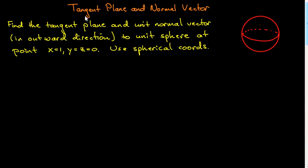In this screencast, I'm going to consider computing the tangent plane and normal vector to a surface. The question I've chosen to illustrate this is: find the tangent plane and the unit normal vector in the outward direction to the unit sphere at the point x=1, y=0, z=0. You can see that's on the unit sphere. We're told to use spherical coordinates, and in general, if you're working with a sphere, you should use spherical coordinates unless told otherwise.